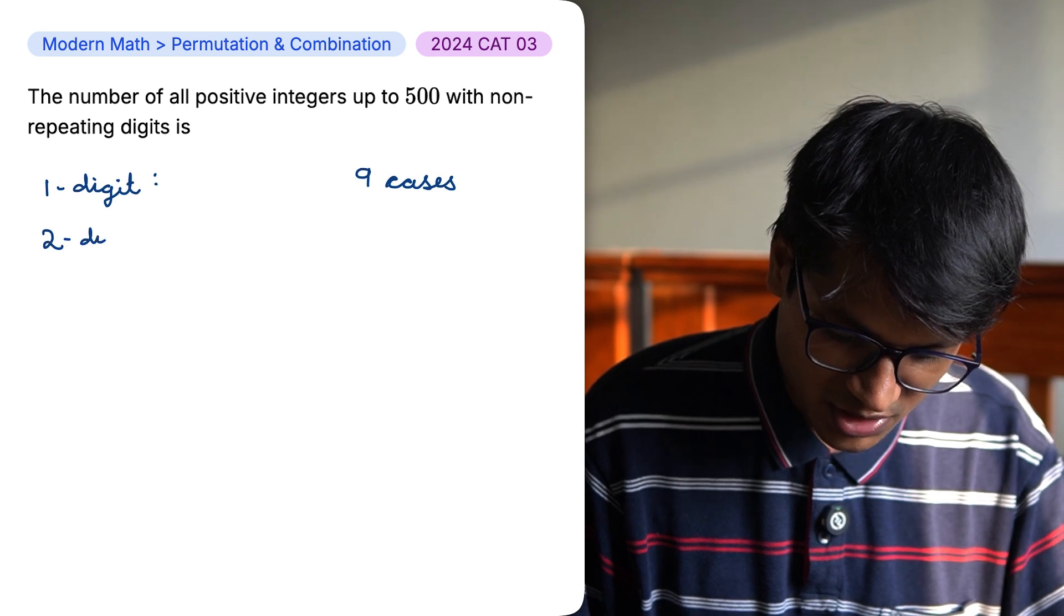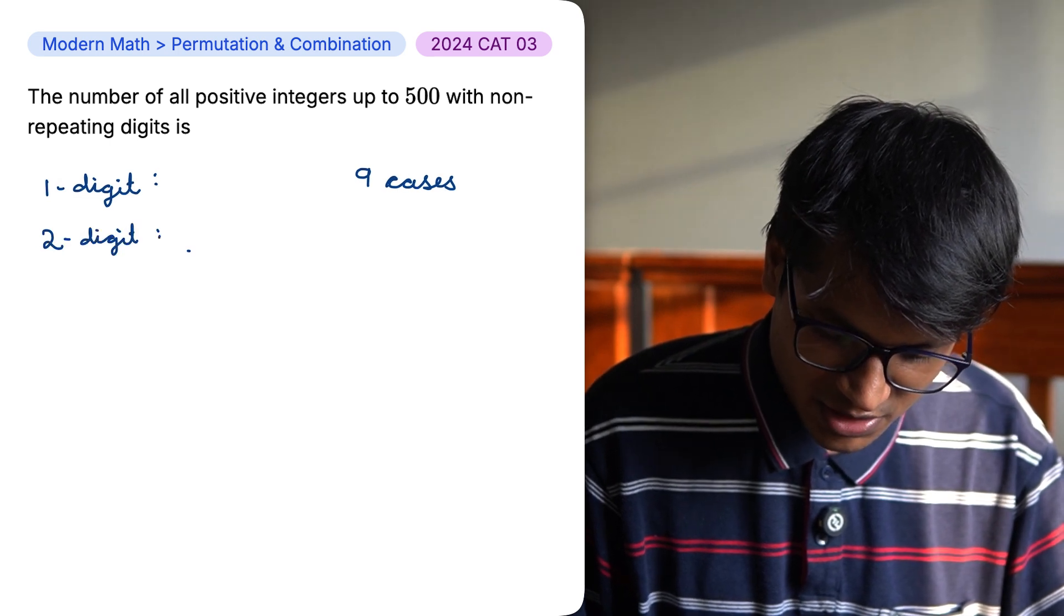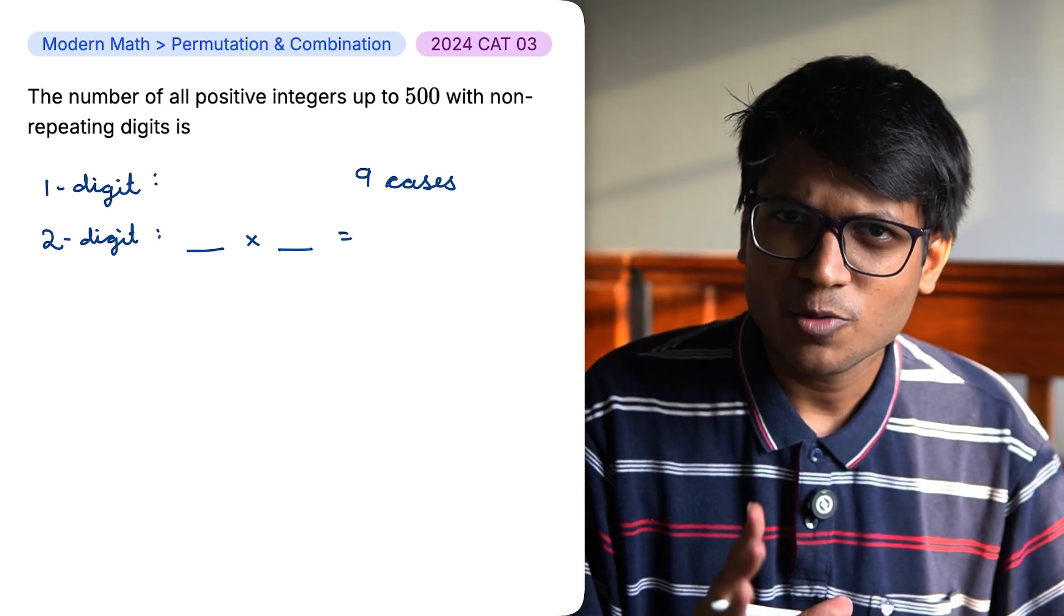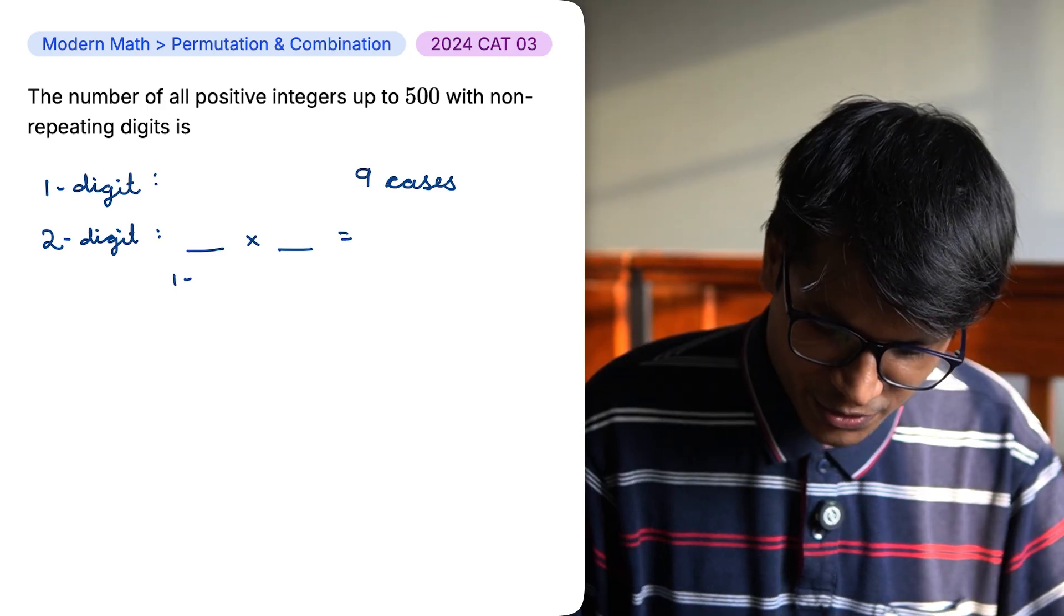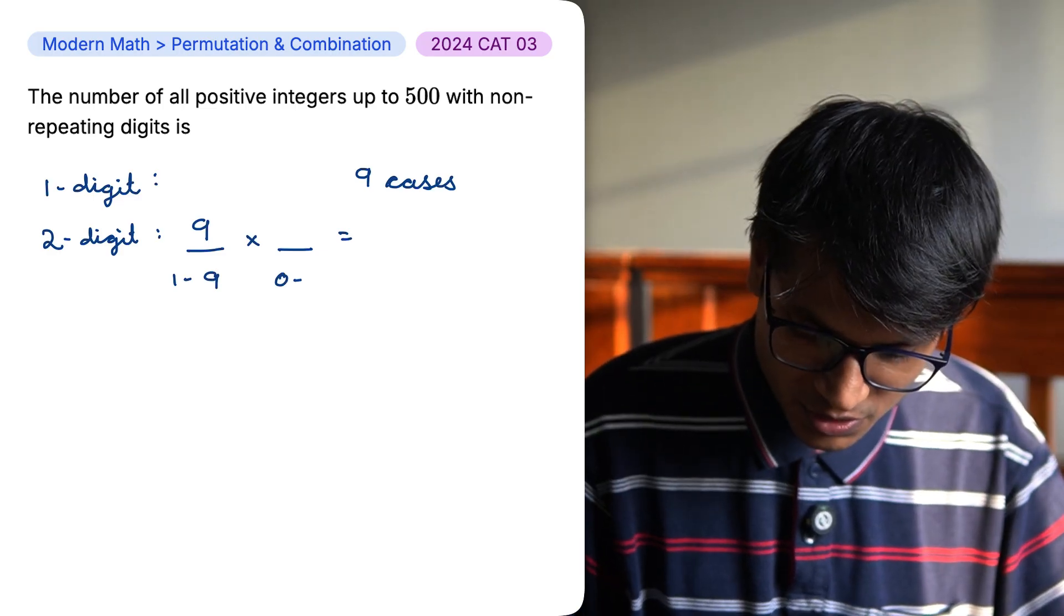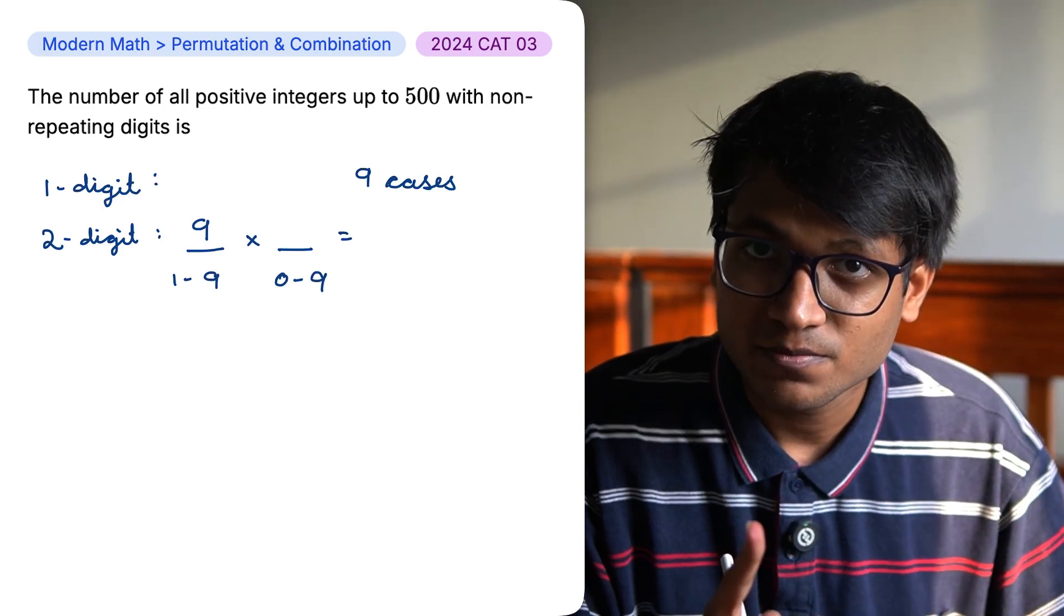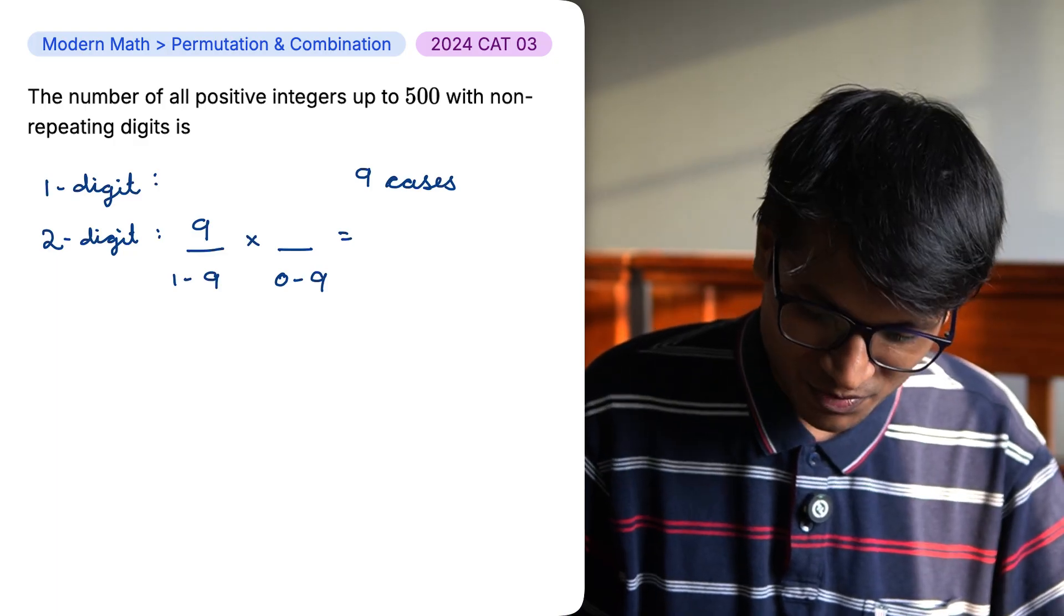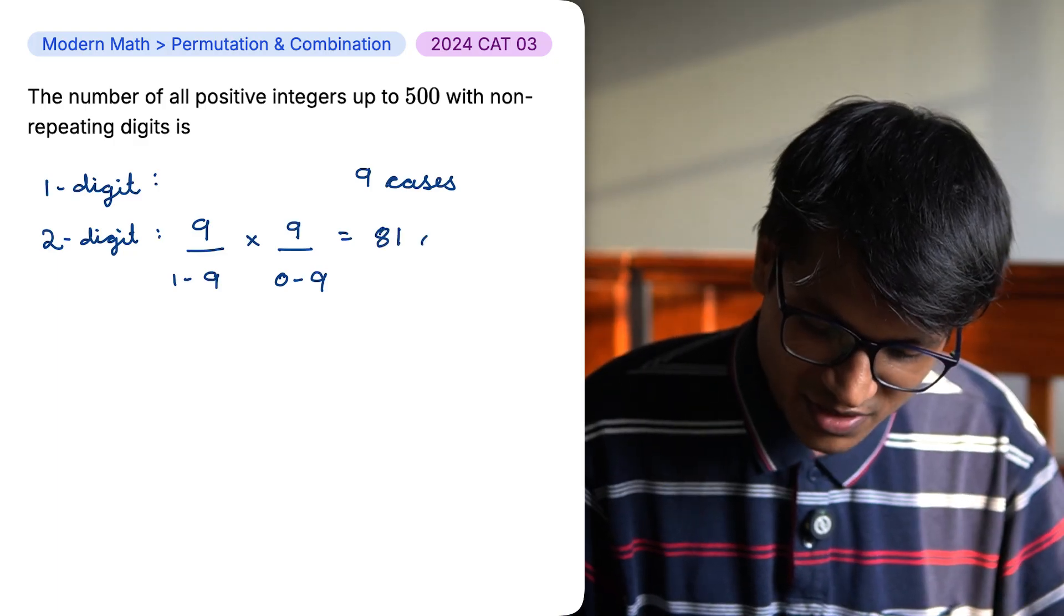Now let's look at two digit numbers. I have a tens place and I have a unit place. In the tens place, I cannot put a 0. It needs to be 1 to 9. But in the case of unit digit, I can definitely put a 0, 0 to 9. So I have 10 cases but it cannot be repeating. So I'll have to subtract 1 case from the total. So overall, I have 81 cases.